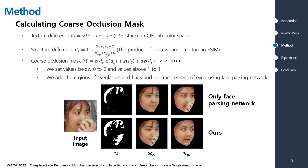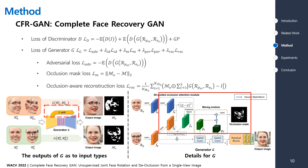To calculate the coarse occlusion mask, we used texture difference and structure difference using CIE Lab color space and SSIM. We improved the downsampling model of CycleGAN to enable the detection and removal of occlusions by adding an occlusion passing path O.